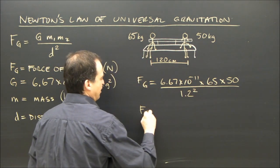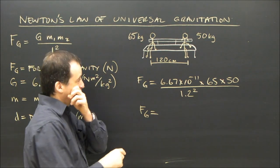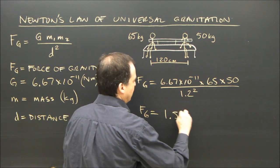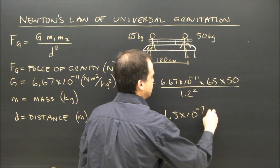So the force of gravity that the boy pulls on the girl, or the girl pulls on the boy, is equal to, we calculate that, 1.5 times 10 to the minus 7 newtons.